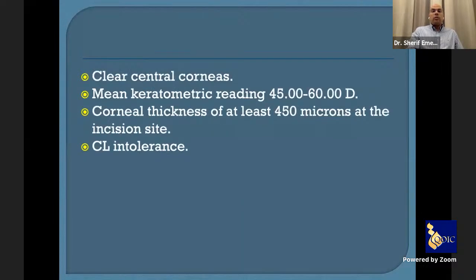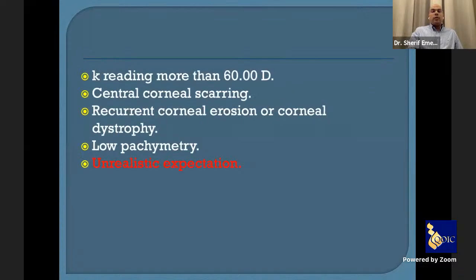The indication is clear central cornea. The keratometry reading should be between 45 to 60 diopters. Corneal thickness should be at least 450 microns at the incision site, and the patient should be contact lens intolerant. Contraindications include keratometry more than 60 diopters, central corneal scar, recurrent corneal erosion, and low pachymetry — since decreased collagen fiber percentage reduces the effect of the ring segment.